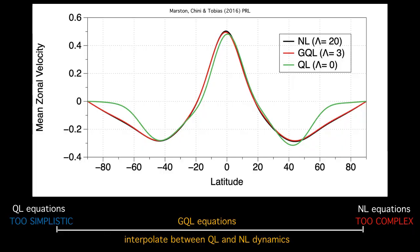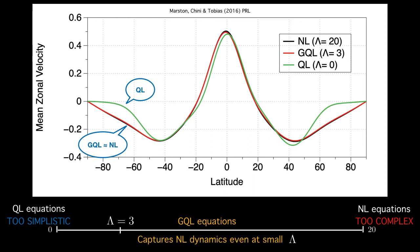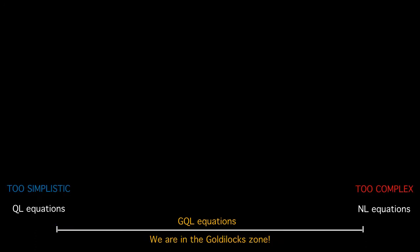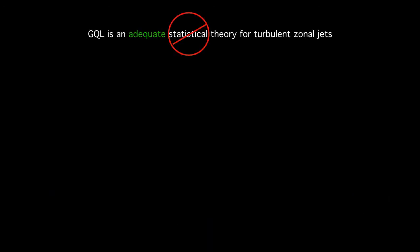So Marston, Chini and Tobias recently performed simulations on the beta plane using stochastic forcing and they compared the effectiveness of GQL at varying values of the cutoff wave number. Now the note is that QL tends to be indeed a simplistic description and it over predicts the zonal velocity in high latitudes. But GQL with even small values of lambda can replicate the essential non-linear dynamics. So we are in the Goldilocks zone with GQL equations. So in our quest it seems that GQL is an adequate but not statistical theory.